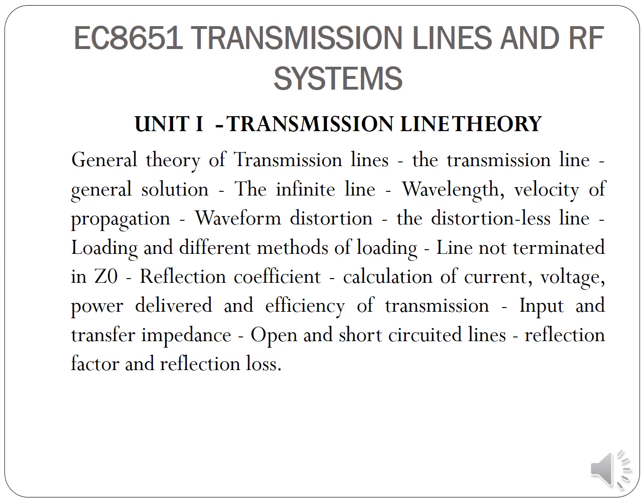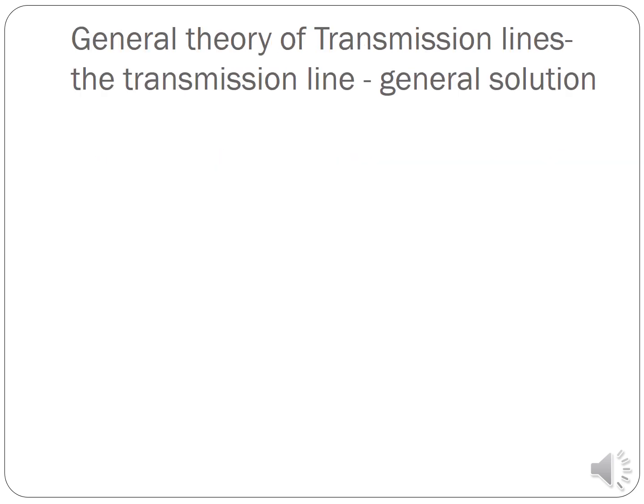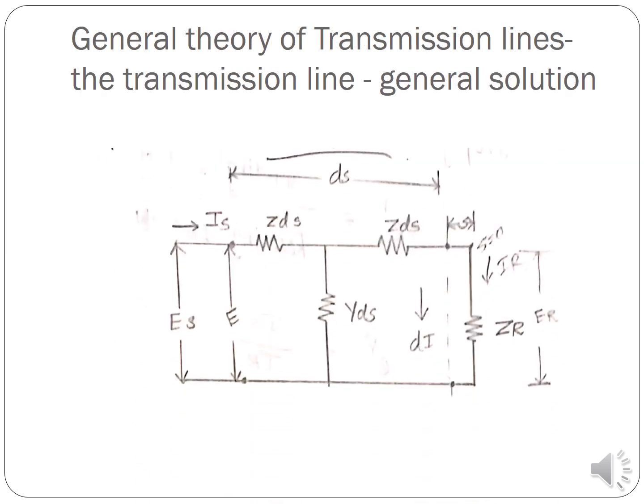The first topic deals with the general theory of transmission line. Consider a two-port network with input voltage ES and current IS, and output voltage ER and output current IR, with impedance Z·DS and admittance Y·DS at a distance DS from the source to the receiver.